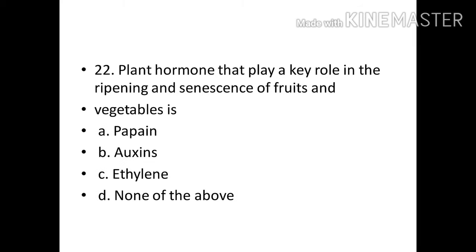Plant hormone that plays a key role in the ripening and senescence of fruits and vegetables is? Options: Papain, Auxins, Ethylene, None of the above. Correct answer: Option C, Ethylene.